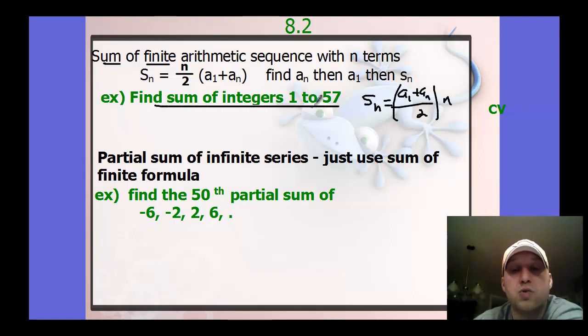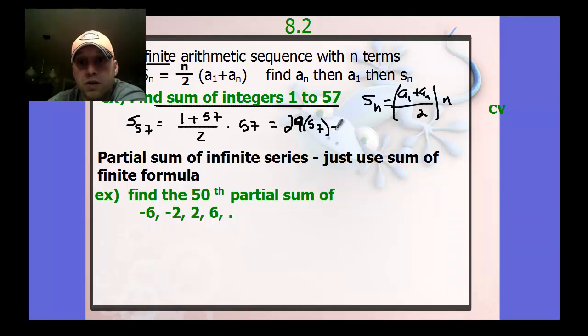So the sum of the integers 1 to 57. This is an arithmetic sequence because you're just adding 1 every time. So we can find the finite arithmetic summation. So to plug that in, it's going to be S of 57, 57 terms. So then the first term in that is 1, the last term is 57. I divide that by 2, and then multiply by how many terms, 57. So that's going to be 58 divided by 2, or 29 times 57, and you get 1,653.